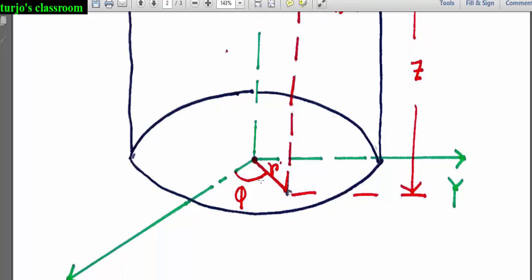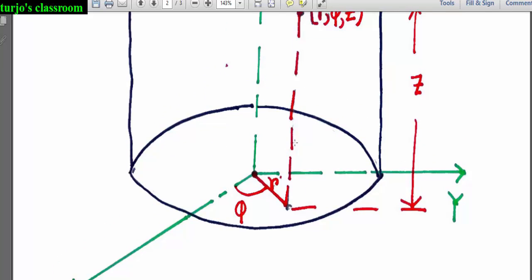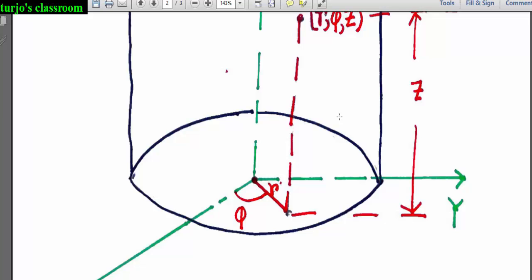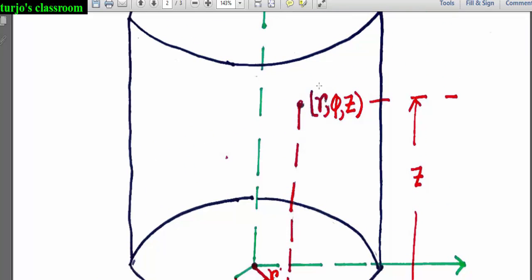There's the orthogonal projection of our point, and r is the distance of this orthogonal projection from the origin. Phi is the angle that r makes with the x axis, and z is the height of the point from the xy plane. Here r and z are two lengths, so for them we do not need any metric conversion coefficient.